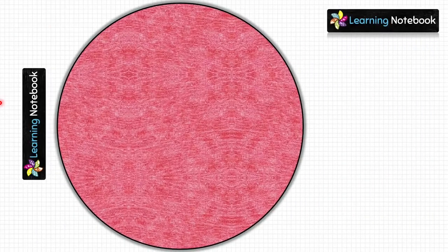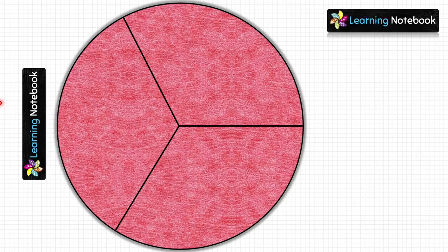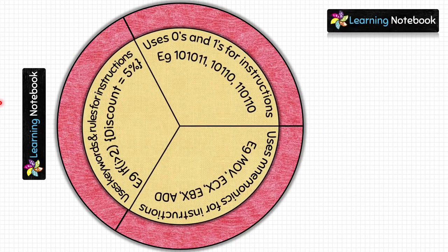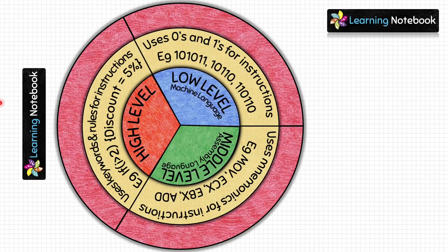Now take the pink circle and divide it into three equal parts by making angles of 120 degrees each. Place the yellow circle on top of the pink circle, match their centers, then place the smallest white circle on both, making sure all three centers are aligned.